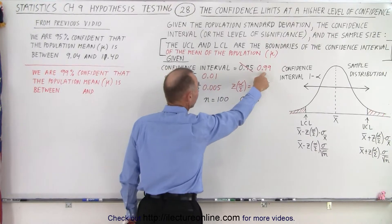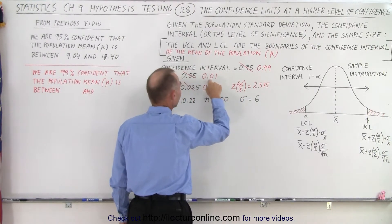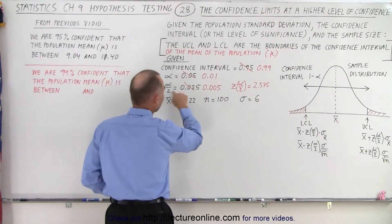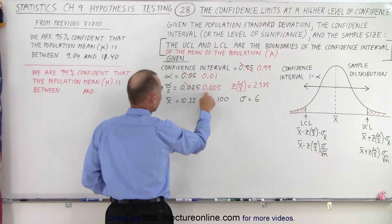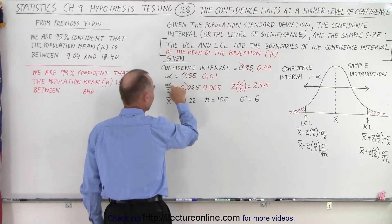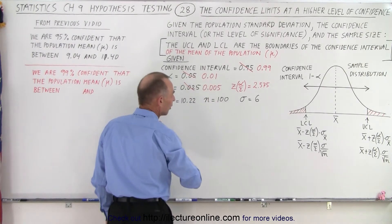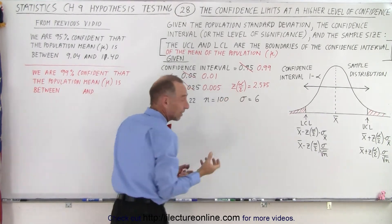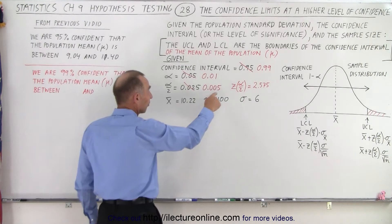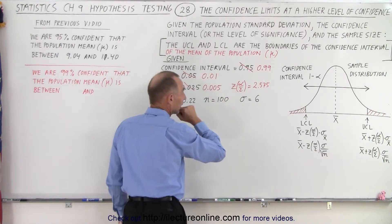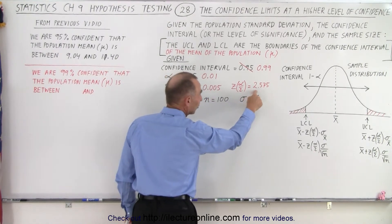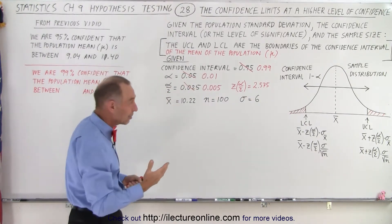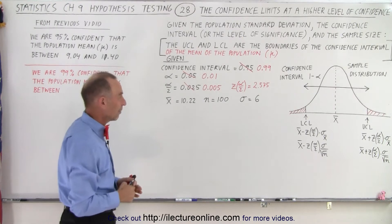We're going to increase our confidence interval to 0.99, so that the level of significance is now 0.01. Since it's a two-tailed problem, we divide that by 2, giving us α/2 = 0.005. We then calculate the z-score, which from our table corresponds to the 0.5% tail, giving a z-score of 2.575. Now we're going to calculate the upper and lower confidence limits.